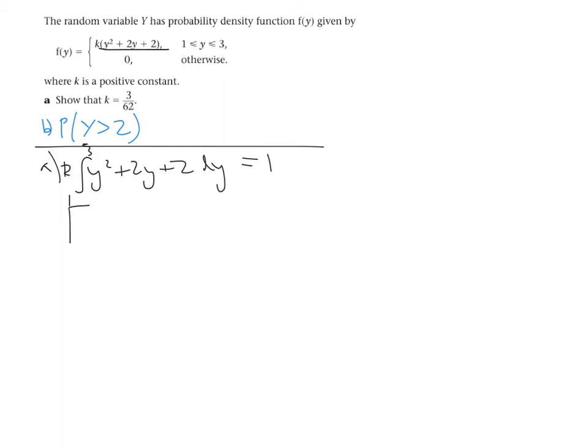So if we integrate those, we're going to get y cubed over 3 plus 2y squared over 2 plus 2y, and that's again between 1 and 3, and that is equal to 1.